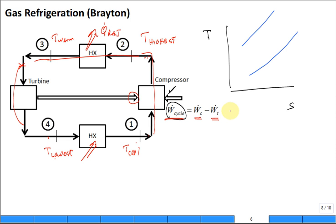Let's put state one over here. We then compress isentropically—I'm not going to put in irreversibilities yet—to state two. That's the highest temperature. See how high that temperature is on a temperature-entropy diagram? Way up here is T2.